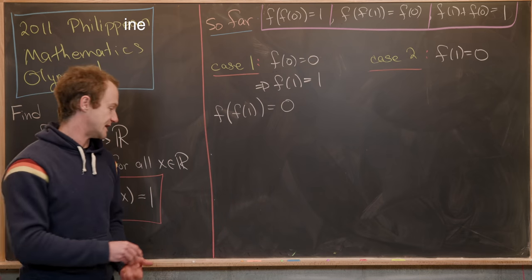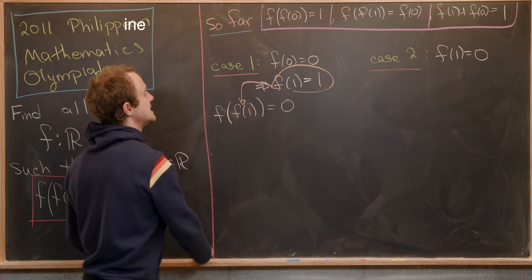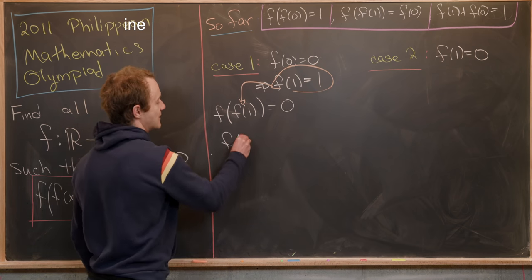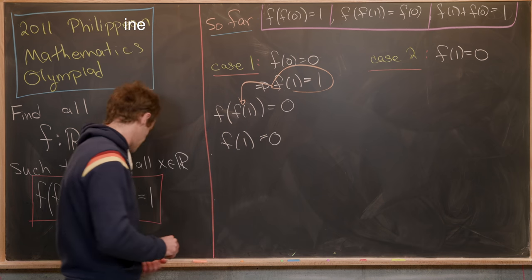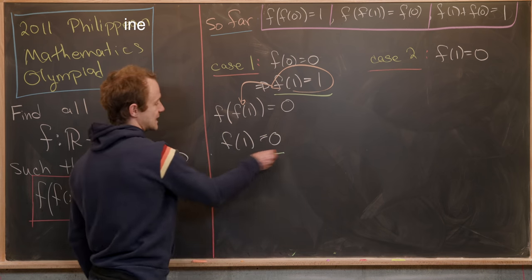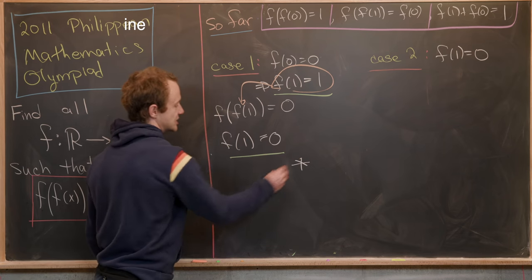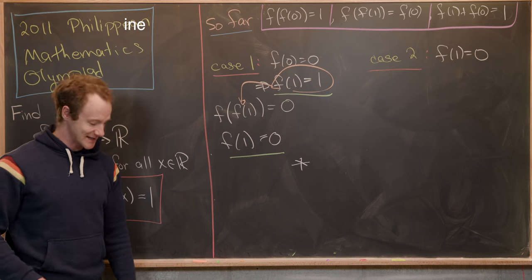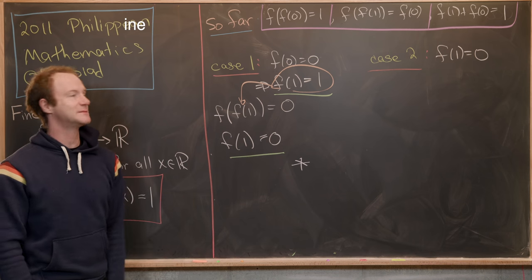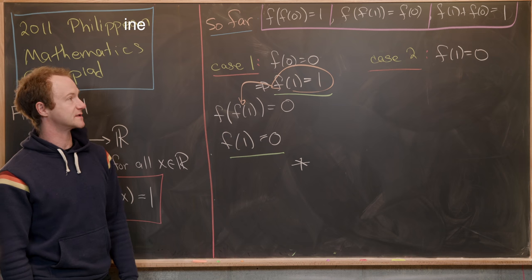But also, we have f(1) = 1. So we can plug this in here. And we see that f(1) = 0. So simultaneously, we have f(1) = 1 and f(1) = 0. So that's a contradiction, which means this case is impossible. So let's jump to the second case. And that's the case when f(1) = 0.